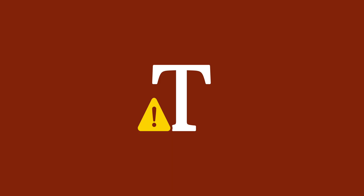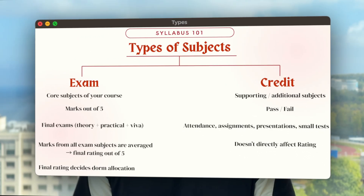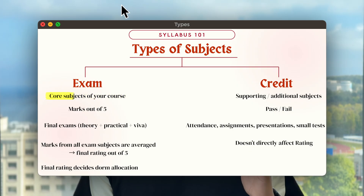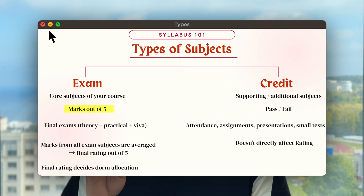What are the types of subjects you will be studying in your first year? These are broadly divided into two categories: exam and credit. Exam subjects are the core subjects of your syllabus. In this type of subject, you will be marked out of five — for example, four out of five or three out of five.